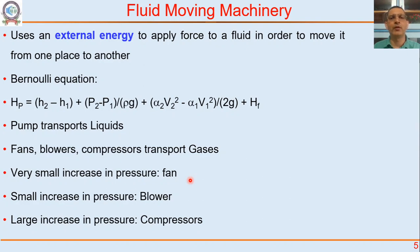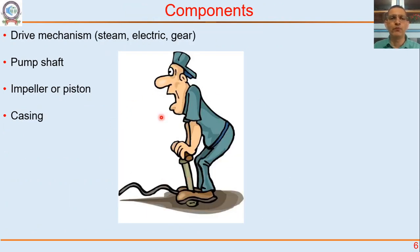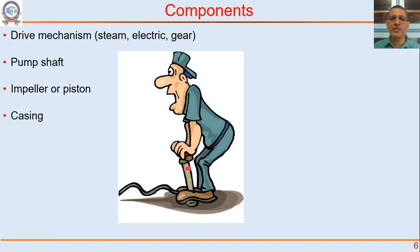If you look at the bicycle pump, you see four parts. First is the drive mechanism — the person supplying the energy; in an actual machine it could be steam or electrical energy. Second is the pump shaft — what goes up and down, connecting the energy source to where compression happens. Third is the impeller or piston — something that moves inside. Fourth is the casing — the outside where the air is held, gets compressed, and the compressed air exits.